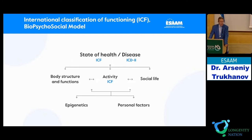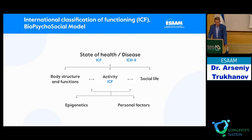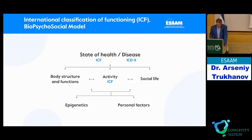What is the difference between clinical medicine and anti-aging medicine? The main document for clinical medicine today is the International Classification of Disease, and the main goal of doctors is to find the organ in the body responsible for the disease. In anti-aging medicine, our goal is quality of life, and we should estimate the state of health of this person. The most appropriate document for us is the International Classification of Functioning, approved by the World Health Organization, where we define state of health by examining body structure, activities, social life, epigenetics, and personal factors. The main model of ICF is the biopsychosocial model.